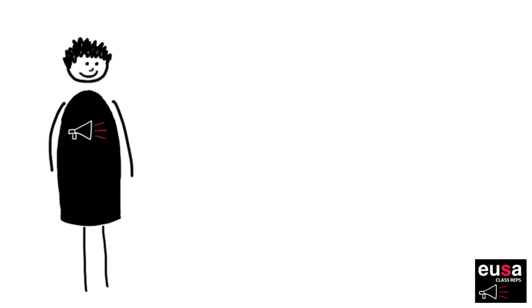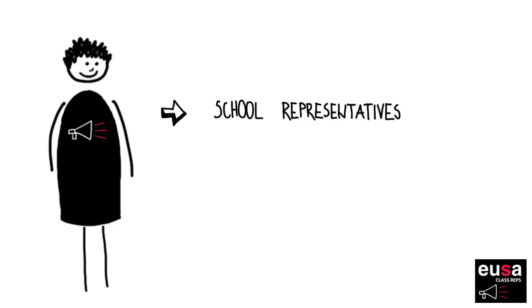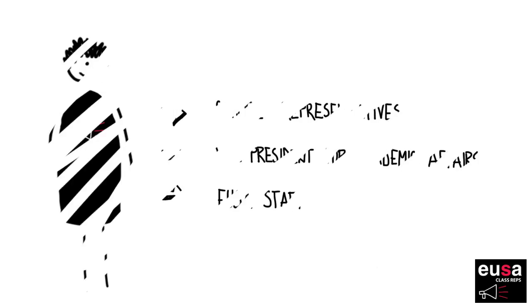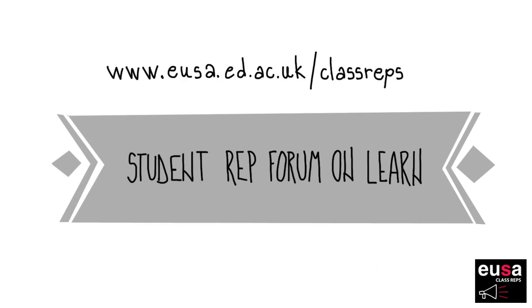If you're struggling to implement any of the changes you're suggesting within your school, speak with your elected school reps, your Vice President Academic Affairs or USA Star for advice. You can find their contact details on the USA website or on the student rep forum in LEARN.